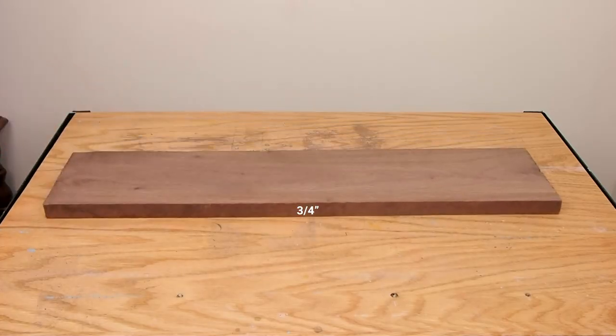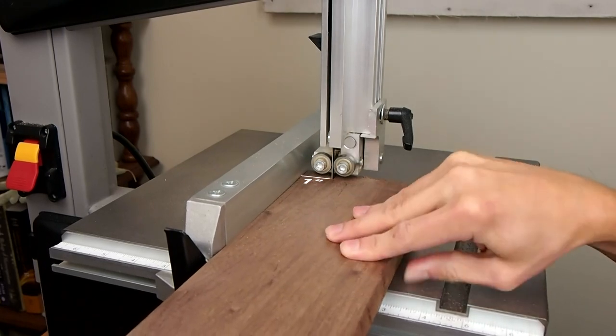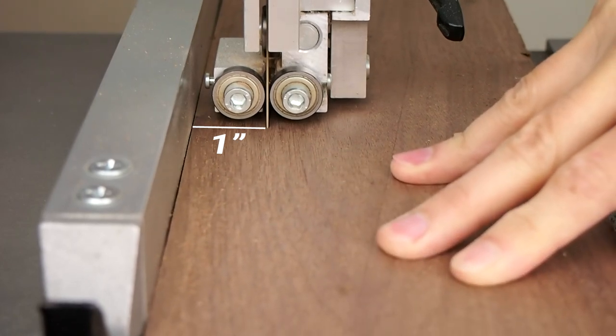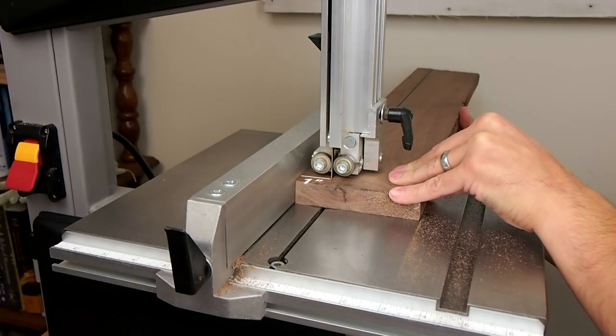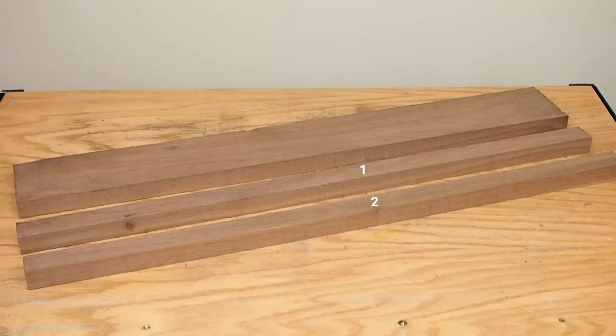I started with a piece of 3 and a quarter inch walnut. I cut strips about 1 inch wide with the bandsaw. Two strips is all I needed for a small frame.